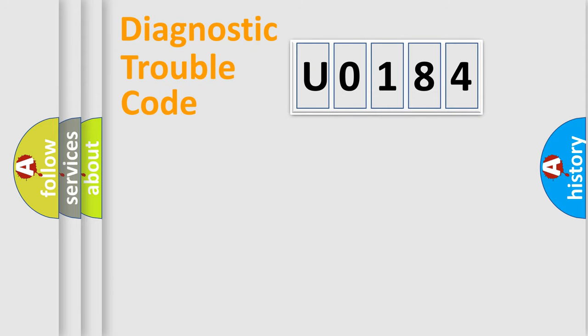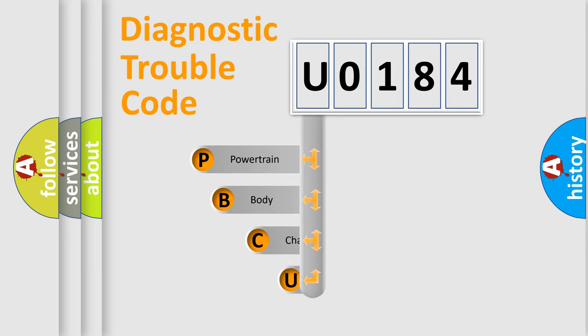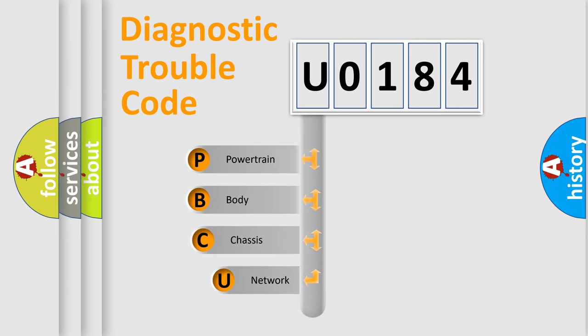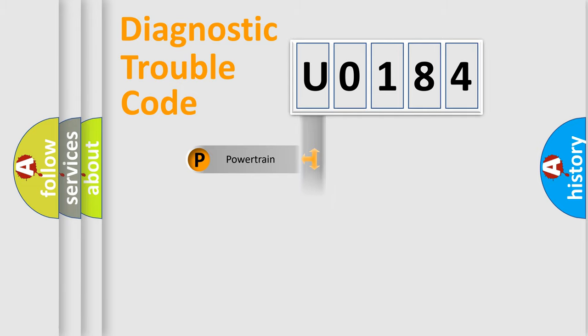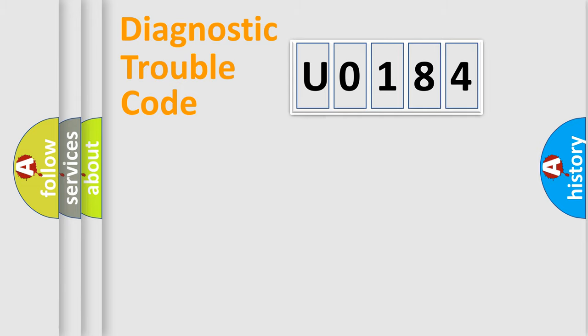Let's do this. First, let's look at the history of diagnostic fault code composition according to the OBD2 protocol, which is unified for all automakers since 2000. We divide the electric system of an automobile into four basic units: Powertrain, body, chassis, and network.